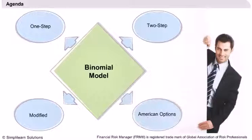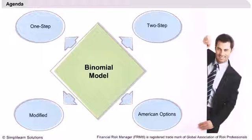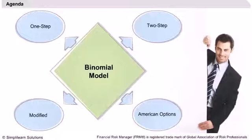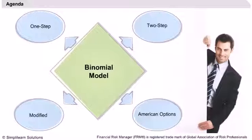In the case of American options, which can be exercised earlier, we will find the option prices as well as their payoffs at each period, and determine whether or not it is worthwhile to exercise early. Accordingly, the values are then discounted back to the present to obtain the option price.